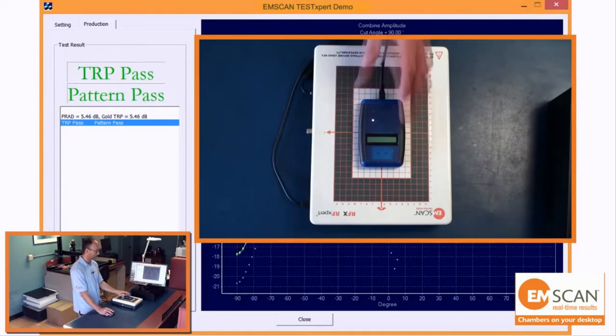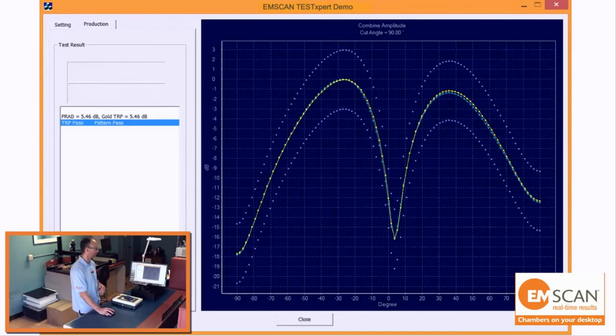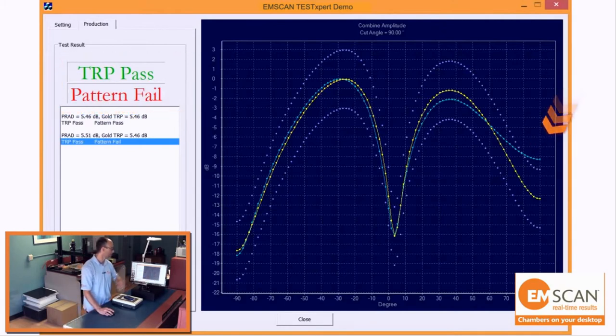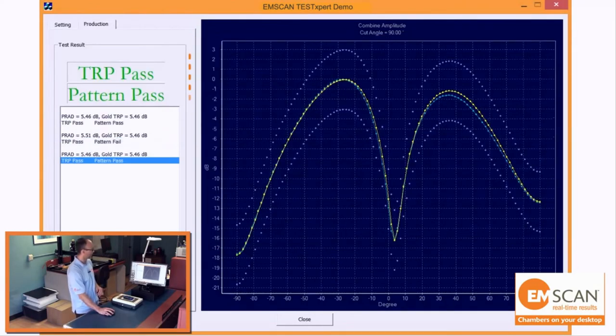Now let's say that something doesn't pass. Maybe the pattern is askew. Here we can see that the TRP in fact passes, but the pattern is out of our bounds. It just slightly exceeds our threshold at the edge there. We'll put it back into alignment and we're now passing again.